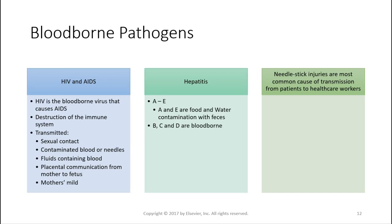Bloodborne pathogens include HIV and AIDS. HIV is a bloodborne virus that causes AIDS through destruction of the immune system. It's transmitted through sexual contact, contaminated blood or needles, sharing needles, blood or fluids containing blood, placental transmission from mother to fetus, and mother's milk. There's also hepatitis A through E — A and E are food- and water-contaminated with feces; B, C, and D are bloodborne. Needle stick injuries are the most common cause of transmission from patient to healthcare workers. Watch your needles, dispose of them properly — that's why there are so many safeties on needles now.